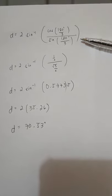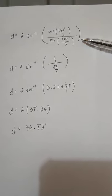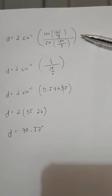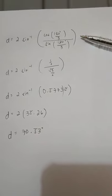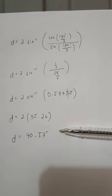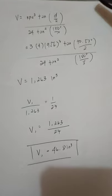D is 2 times sine inverse of cosine of 180 over 30 divided by sine of 180 over 30. As we simplify, D is equal to 70.53 degrees.